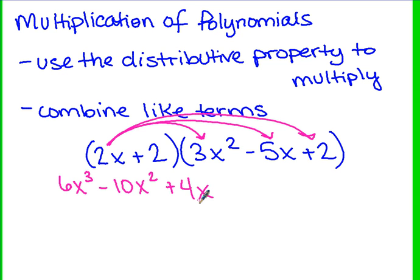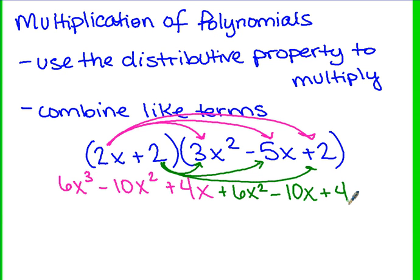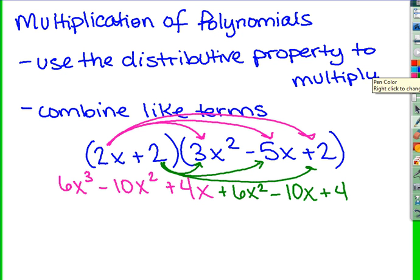That's the first term in the first polynomial to every term in the second. Now we go to the second term in the first expression to every term in the second. 2 times 3x² gives 6x², 2 times -5x gives -10x, and 2 times 2 is 4. So using the distributive property, we have: 6x³ - 10x² + 4x + 6x² - 10x + 4.